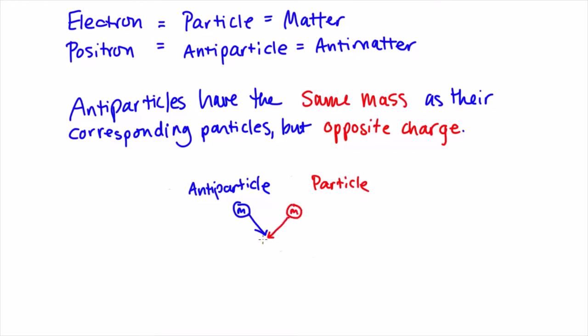In their place, they emit two photons, each with an energy equal to m times the speed of light squared. E equals mc squared is Einstein's famous mass-energy equivalence equation.